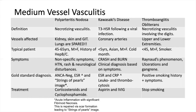Kawasaki's disease classically affects Asian children below the age of four. It presents with nonspecific signs remembered by the mnemonic CRASH and BURN: C for conjunctivitis, R for rash, A for adenopathy, S for strawberry tongue, H for hands and feet rash, and BURN for fever. Coronary artery involvement is common and leads to risk for thrombosis with myocardial infarction and aneurysms which may rupture.